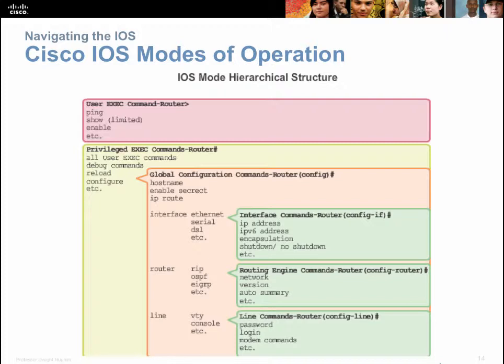If you change modes to privileged exec, that's the administrator mode — a more powerful prompt that allows you to do anything. You'll see that the prompt changes from the caret to the pound sign. From this pound sign prompt, you can reboot the router, delete configs, move configs, and do all of the management and maintenance that you would need to do.